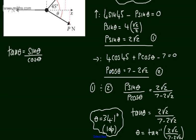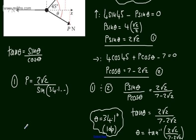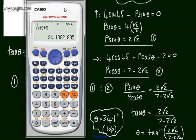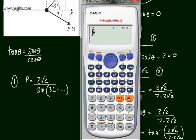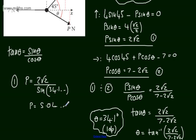Now I can use equation 1 or equation 2 to find the value of P. Using equation 1, P equals 2 root 2 over sine of theta. That's sine of 34.1 degrees. I'm going to store this in the calculator to avoid errors, and we get P equals 2 root 2 over sine of that angle, which gives 5.04. Therefore P is equal to 5.0 Newtons, given to one decimal place.